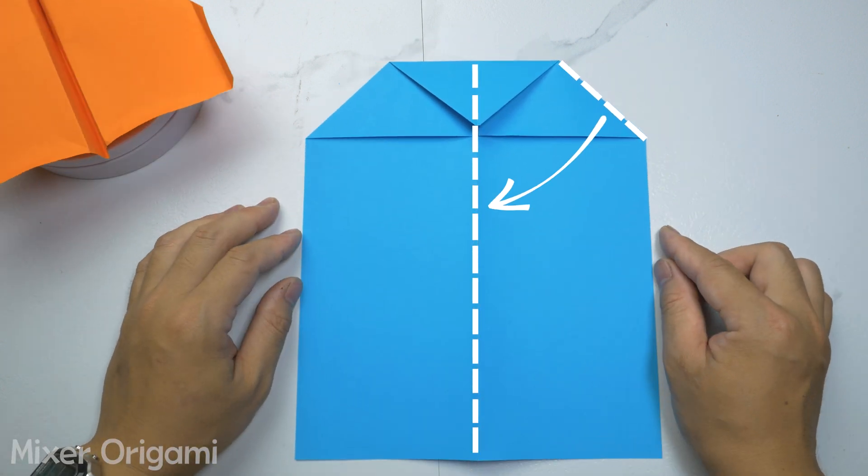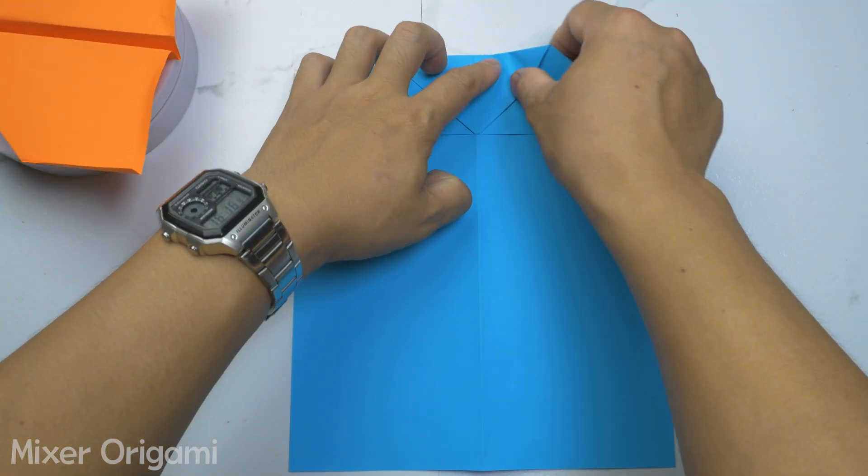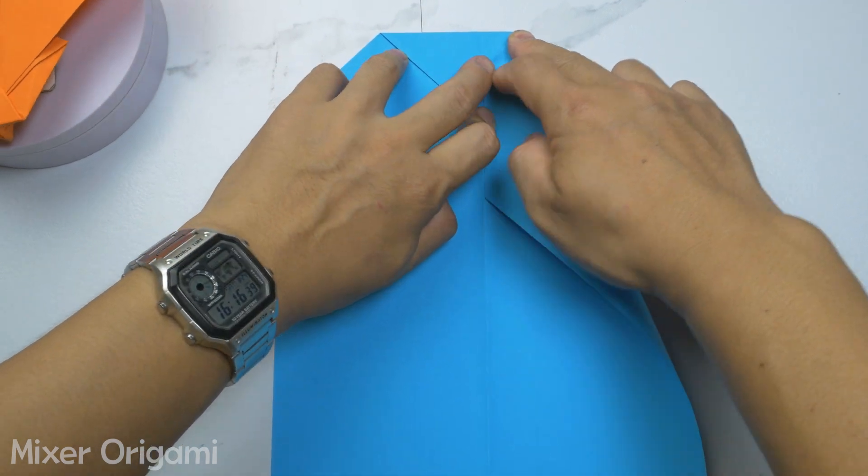Step 4. Turn the paper over and we will fold the diagonal edge down to the vertical centerline. Pause the video if you need to see it more clearly.